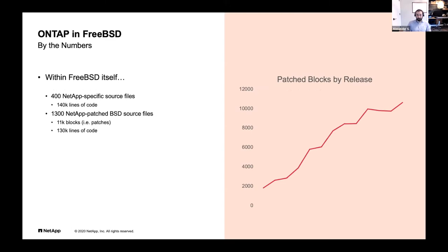By the numbers — because everyone loves numbers and pretty graphs that go up and to the right — except this is not the kind of graph you want to go up and to the right. This shows the number of customizations we make to the FreeBSD base system over time, by release. You can see it's continuing to go up. At this point we have about 11,000 custom blocks — that's either something we've changed in FreeBSD or something we specifically added to the FreeBSD source. And that translates into technical debt as we try to keep up with FreeBSD.